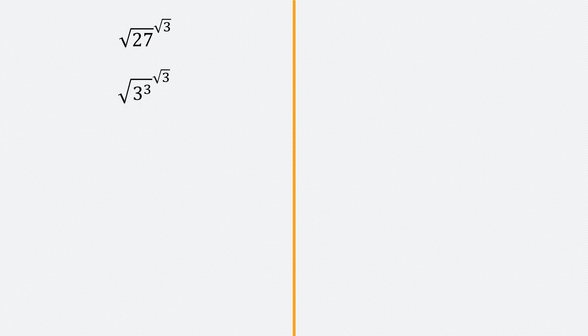The first thing we will do is to write 27 as 3 to the power of 3. So root 27 becomes the square root of 3 cubed, and everything is raised to the power of root 3 as well.